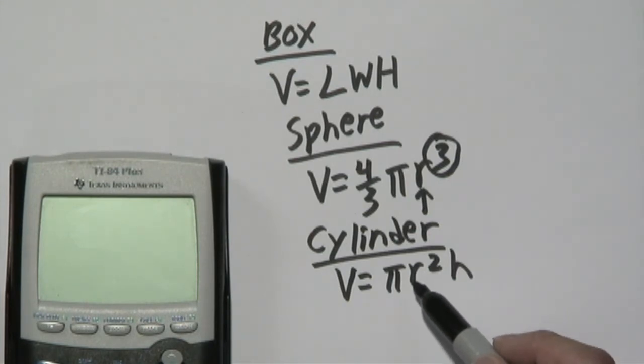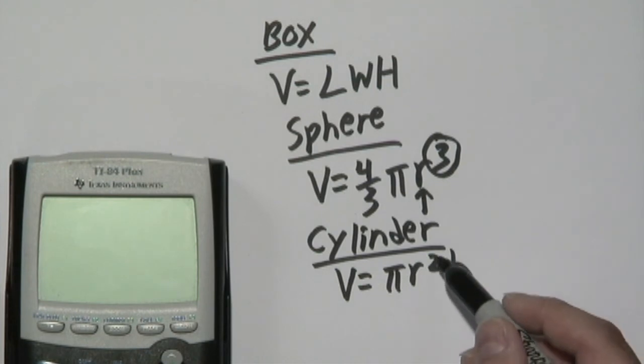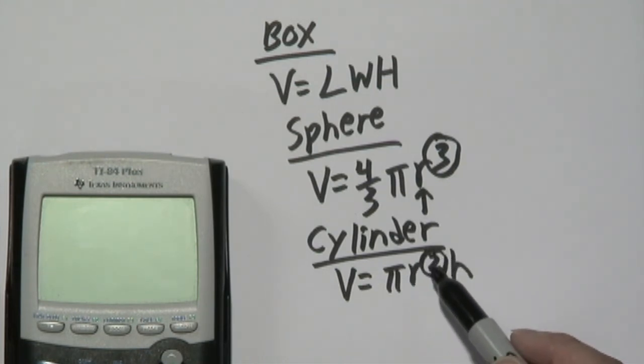You have r which stands for radius squared. That means right there two of the dimensions are already covered because it's r squared, and h stands for height. So there's two dimensions here, additional dimension here for a total of three dimensions.